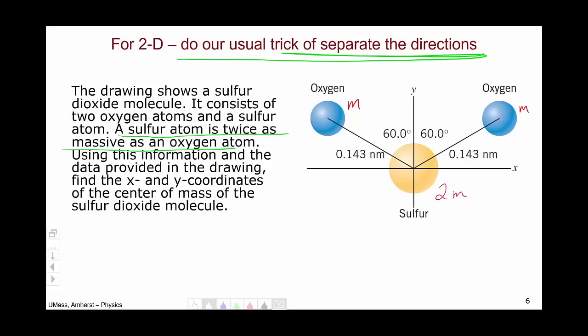And to solve the problem we will separate the directions. So we'll deal with the directions one at a time, say deal with x first. Now the value we need is the x location of the oxygen atom on the left, and we would multiply it by the mass of the oxygen atom over the total mass.